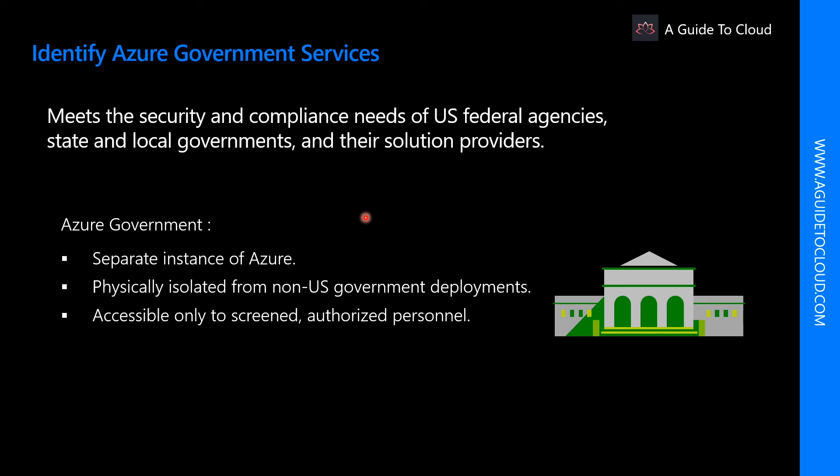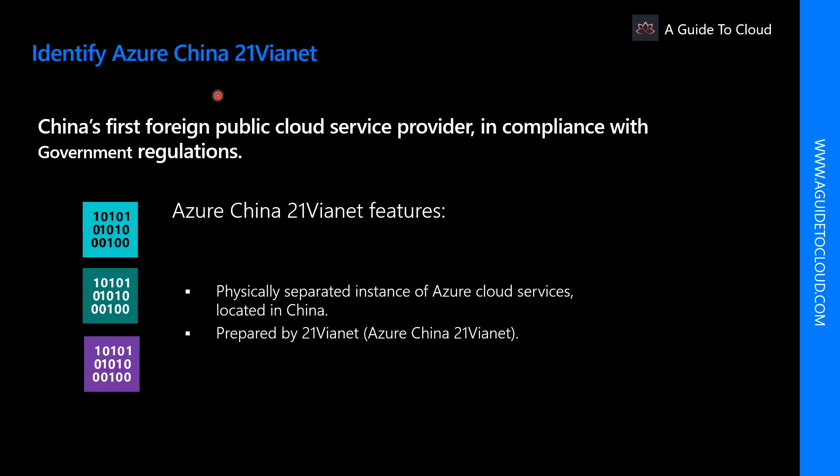Azure Government also offers the most compliance certifications of any cloud provider. Azure China, also known as Azure Government's 21Vianet, is operated by 21Vianet — a physically separated instance of cloud services located in China, independently operated and transacted by Shanghai Blue Cloud Technology Co. Limited. The Azure services are based on the same Azure, Office 365, and Power BI technologies that make up the Microsoft global cloud service.